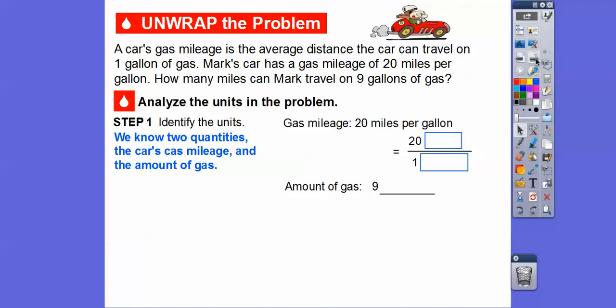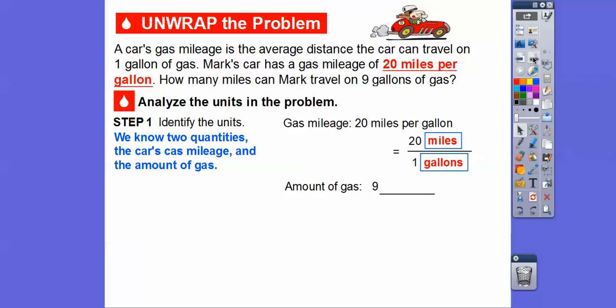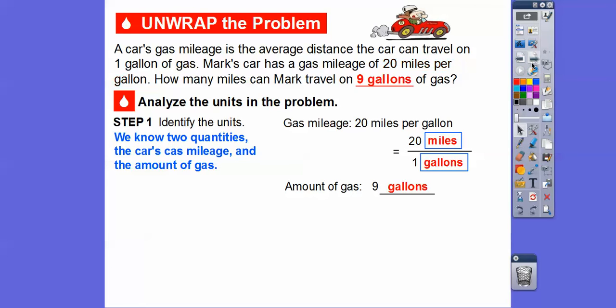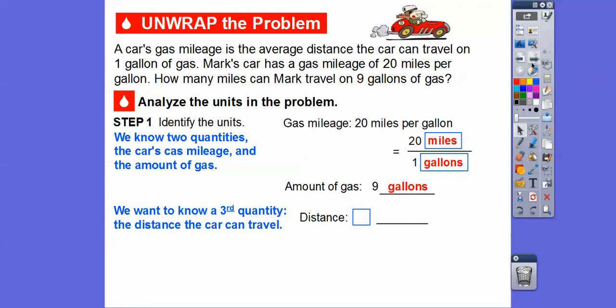The gas mileage is 20 miles per one gallon. The amount of gas is nine gallons. We want to find a third quantity — the distance Mark can travel on those nine gallons. We want to know how many miles that is.